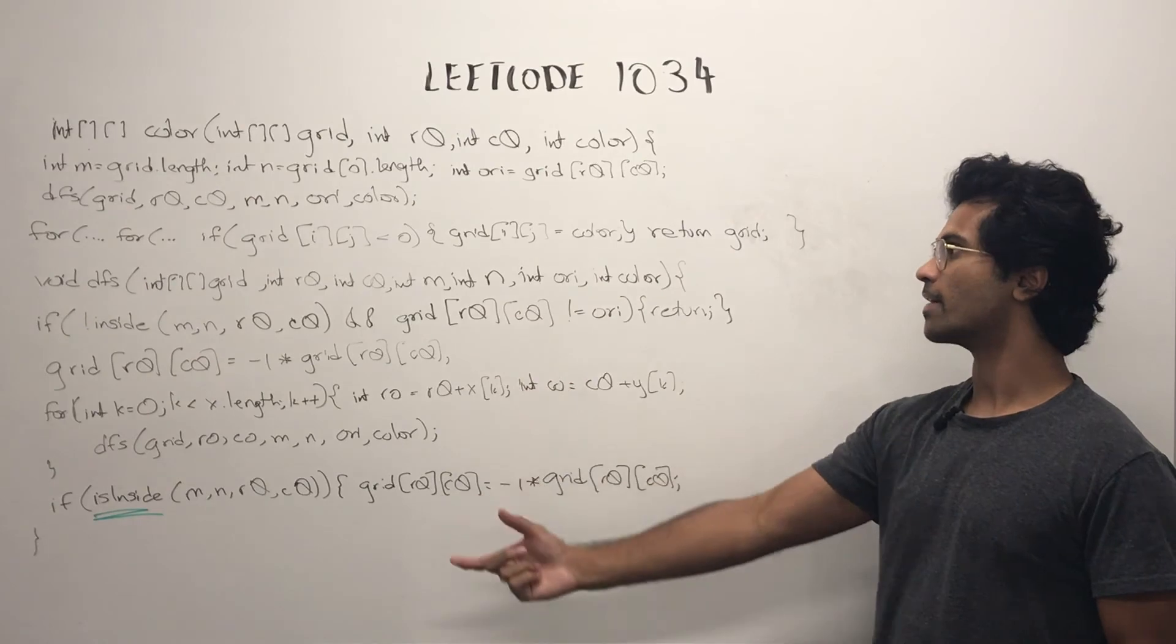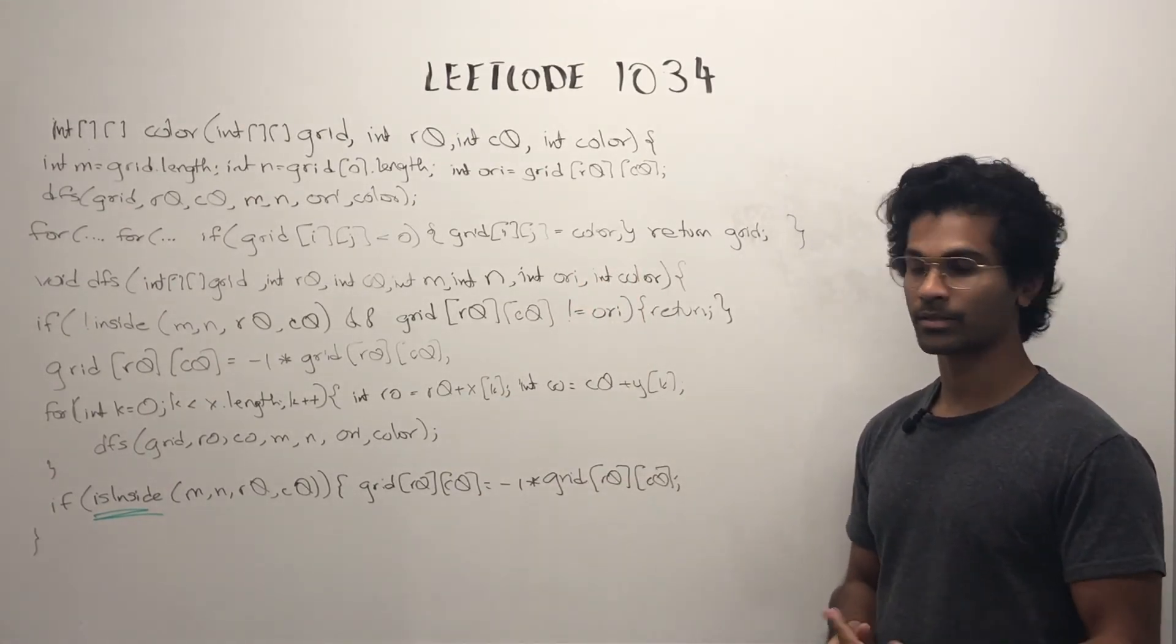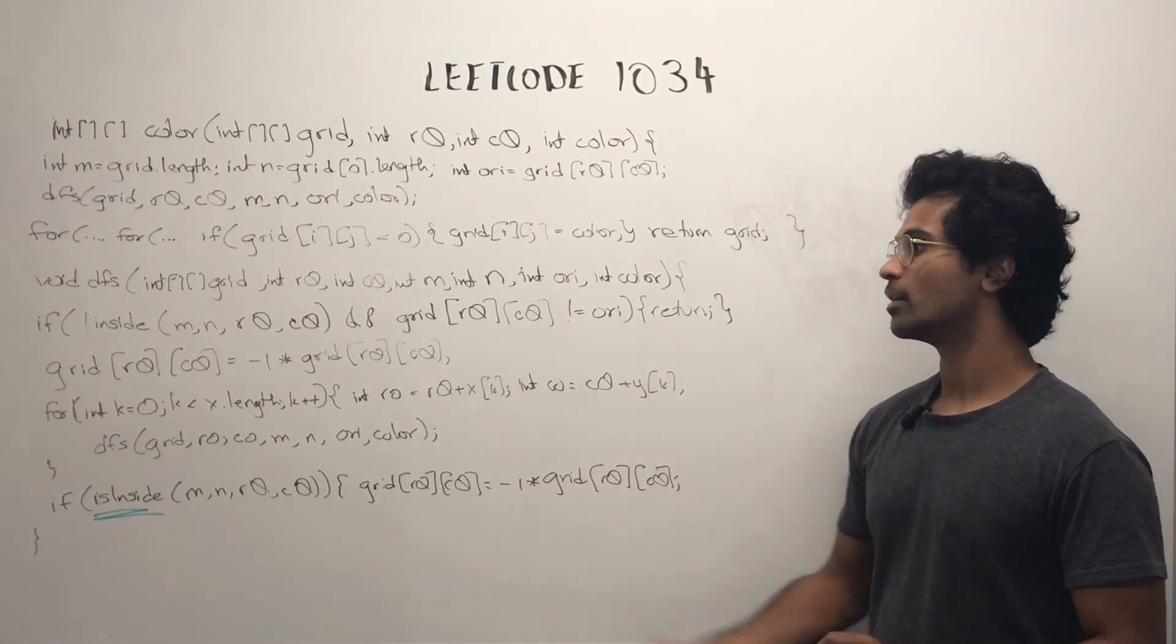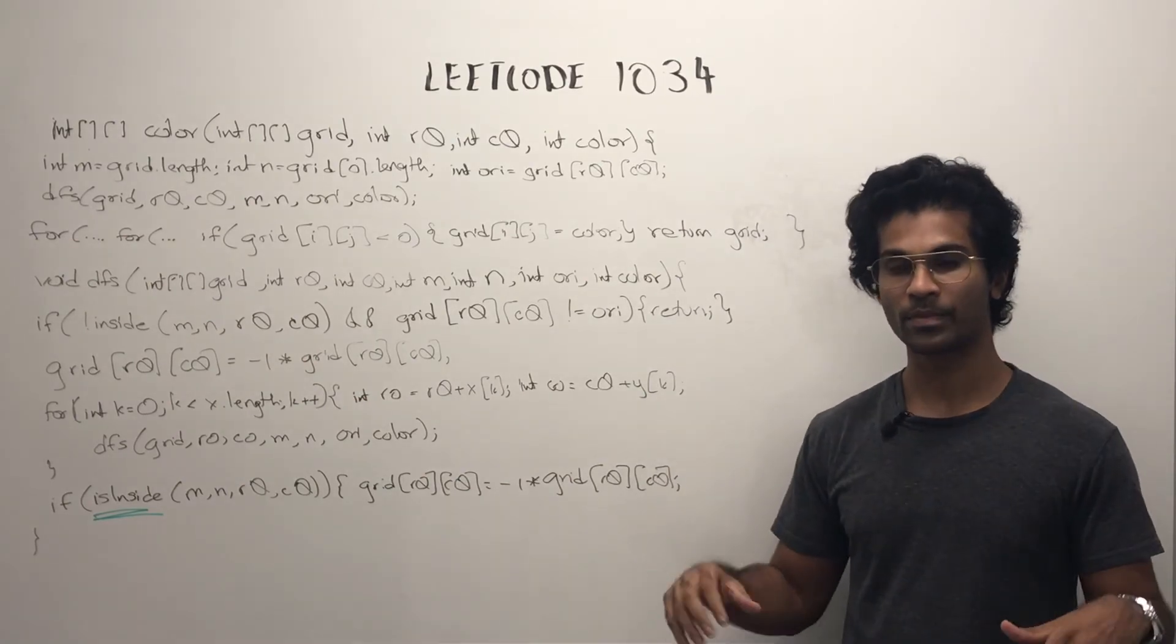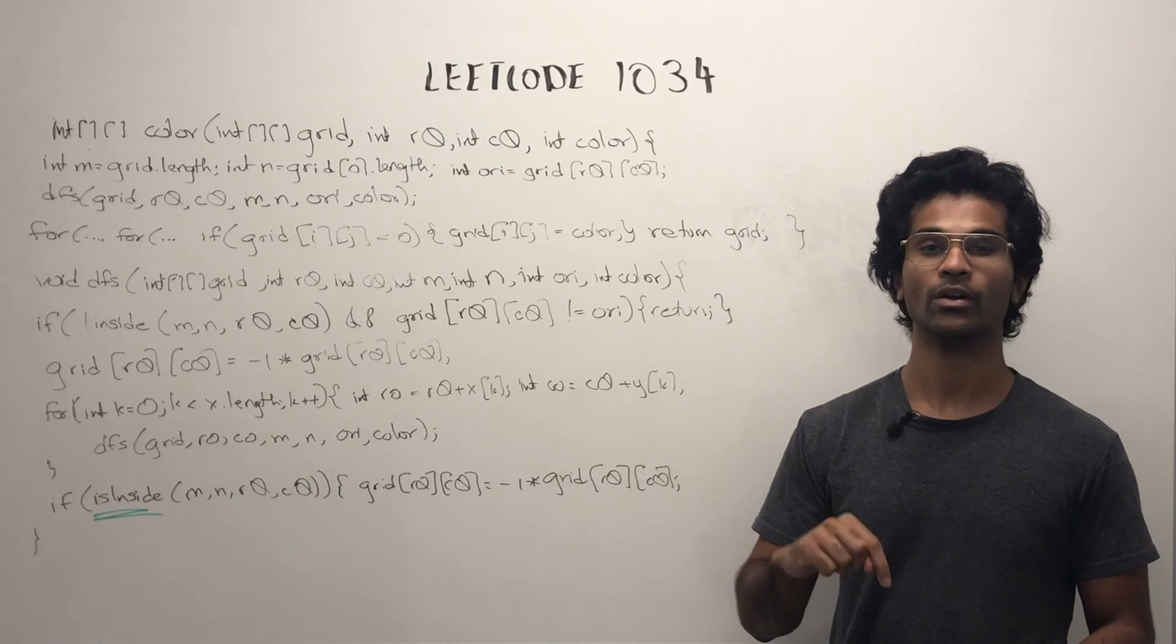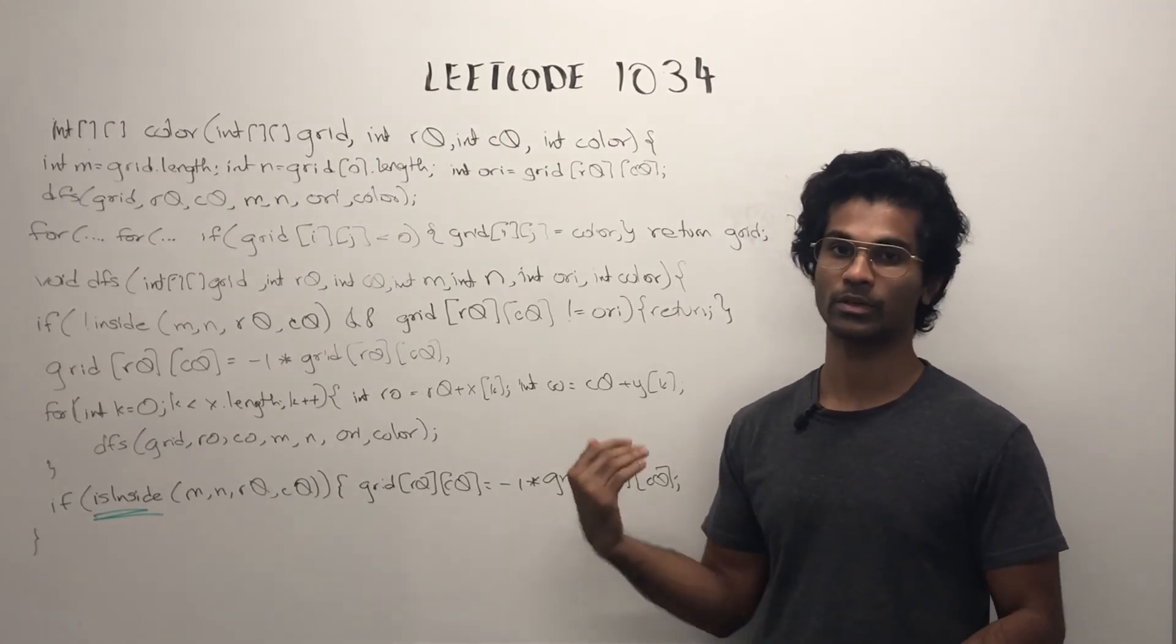Now, let's look at the actual code. First, we grab the dimensions and then we grab the original color and we begin our DFS. So I pass in the required parameters and we return the DFS if we're not within the bounds of the grid or we're visiting a node that's not the original color, which means we're not in the connected component. We don't care about those nodes, so we immediately return.